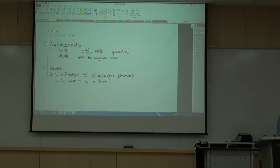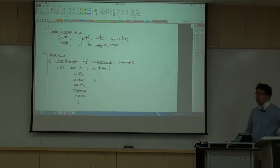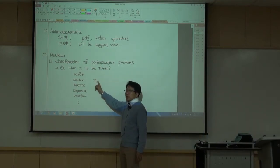In mathematical optimization, what is to be found is restricted to scalars, vectors, matrices, sequences, or continuous-time waveforms. Among these, we are interested in finding the best vector in some sense. Specifically, in this course, the vector has n entries where each entry is a real number.